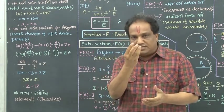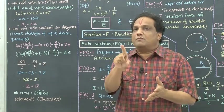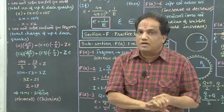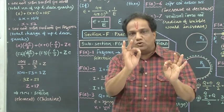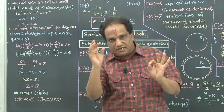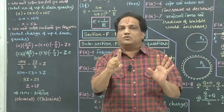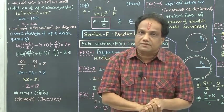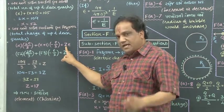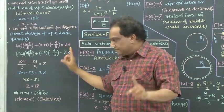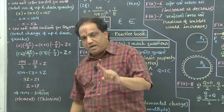Protons also have quark composition. In short, the total charge of all up quarks and down quarks inside the nucleus is going to give you the total positive charge of that nucleus. The positive charge of any nucleus is Z into E, where Z is the atomic number of the given element. Now let us find out the total charge of up and down quarks.